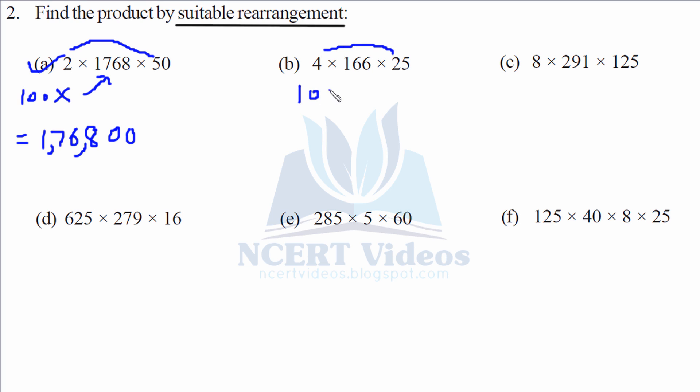Part b. 25 into 4 is 100 into 166. Again it becomes easier. That gives us 16600. Part c. 125 into 8 is 1000 into 291 to give us 291,000.